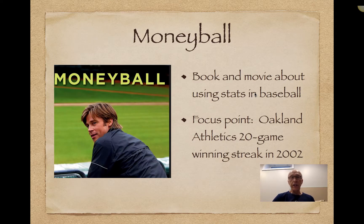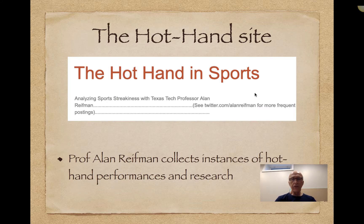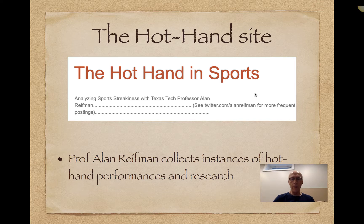There was also a famous movie called Moneyball — originally a book and then a movie featuring Brad Pitt — about using statistics in baseball. One of the focal points in that movie was that the Oakland Athletics won 20 consecutive games in the 2002 season. And there's a friend of mine, Alan Reifman, who is also fascinated with hot hand performances. He has a site called Hot Hand Sports, where he documents a lot of things that happen in sports with respect to streakiness.